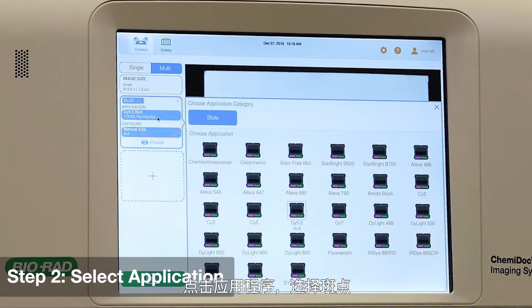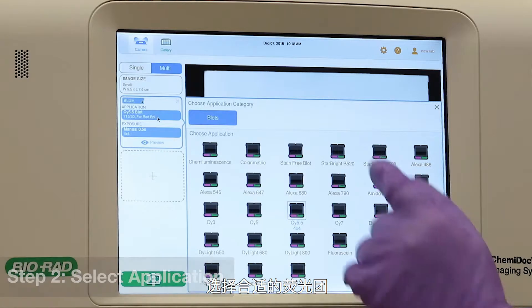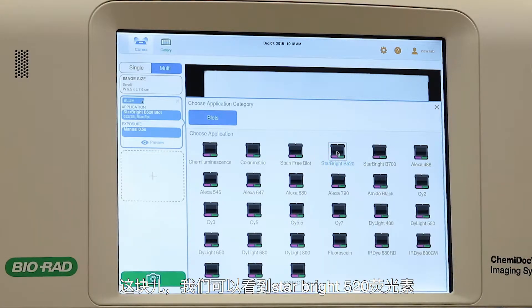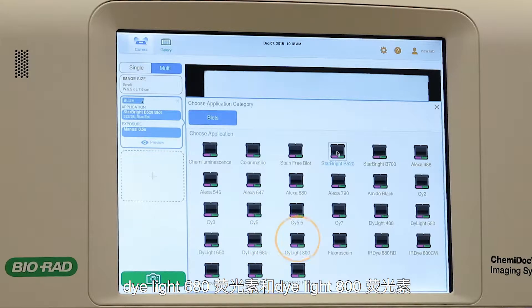Tap Application, select Blots, and choose the appropriate fluorophore. Here we are visualizing Star Bright 520, Dye Light 680, and Dye Light 800.